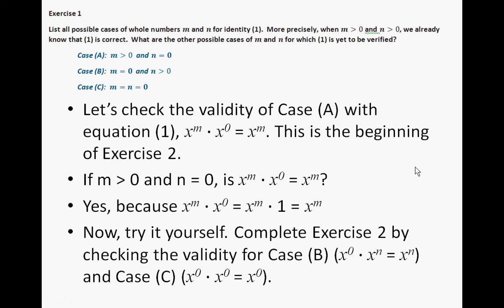Now you're going to try this yourself. Complete exercise 2 by checking the validity for case B — that is, x to the 0th power times x to the mth power equals x to the mth power — and for the third case, x to the 0th power times x to the 0th power is x to the 0th power. The answers for these two questions should be similar to what we just did for the first case. Give it a shot, then continue the video and check your answers.